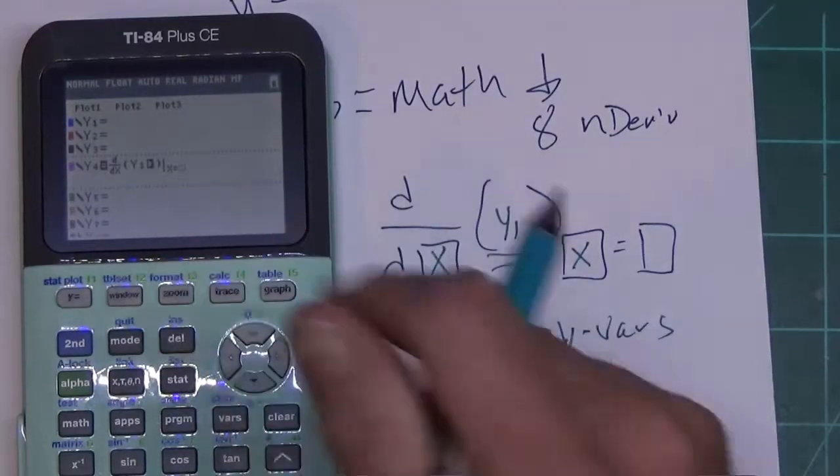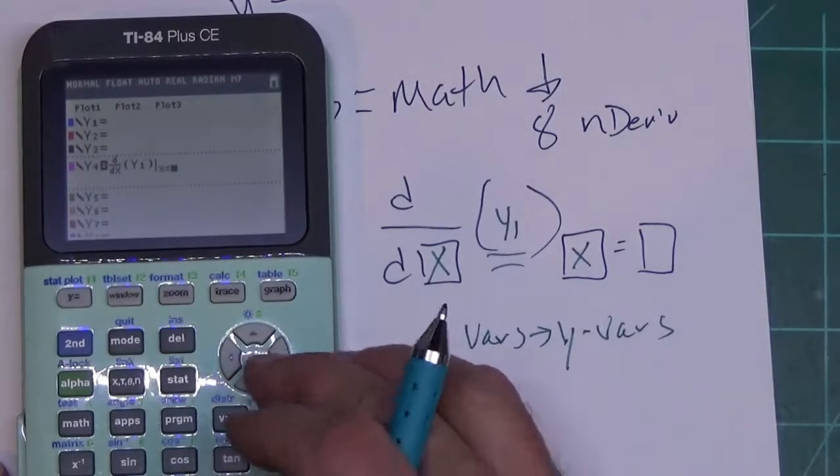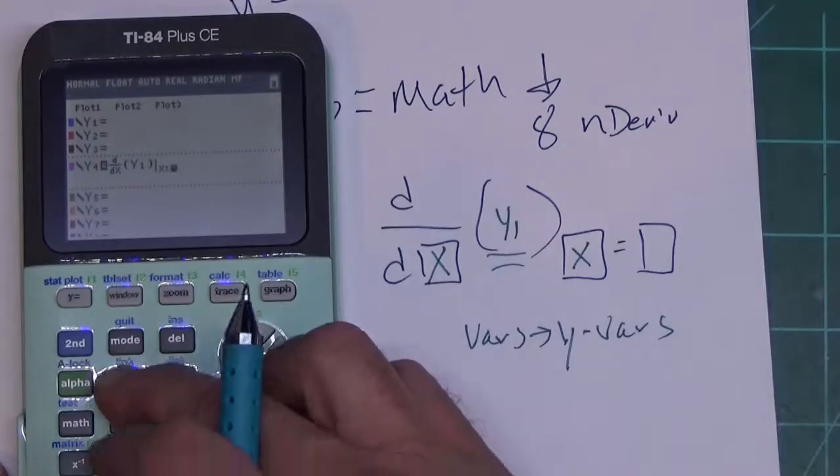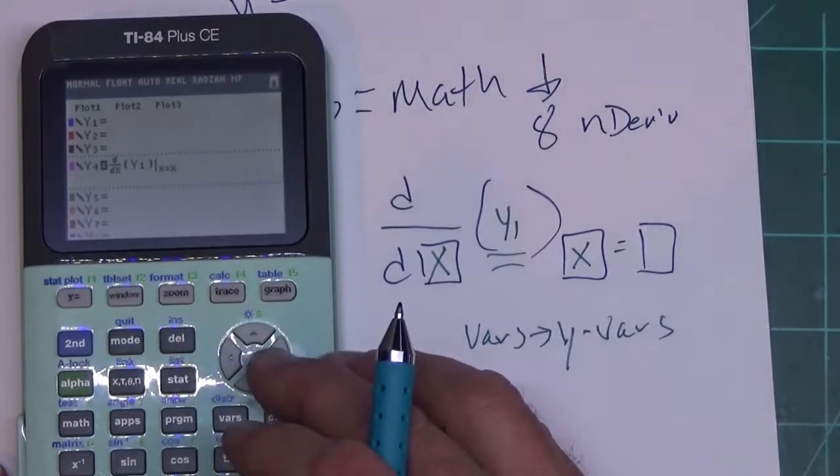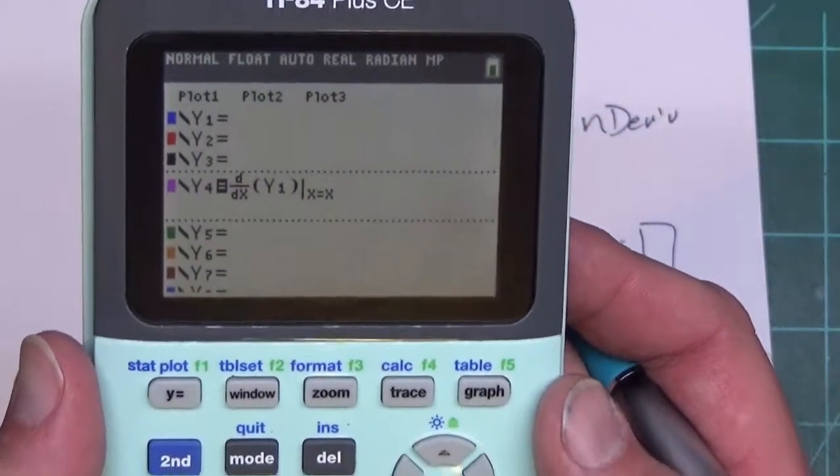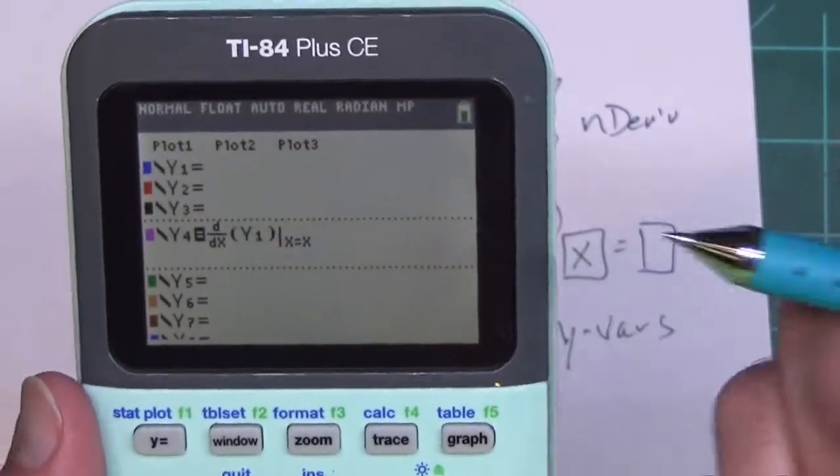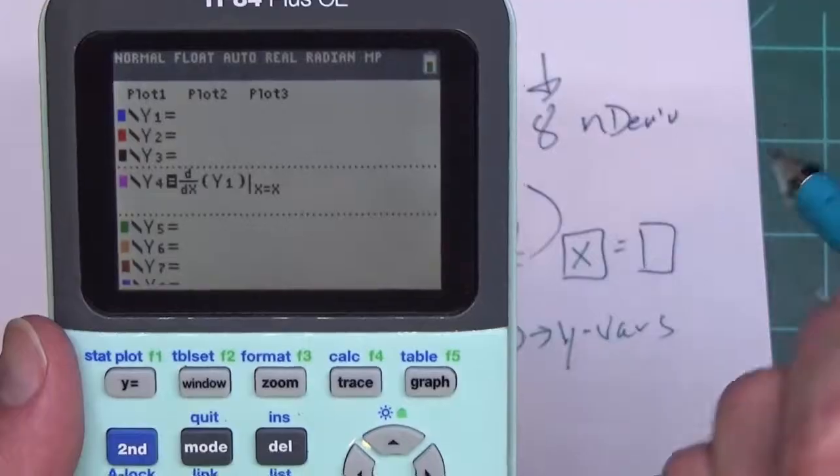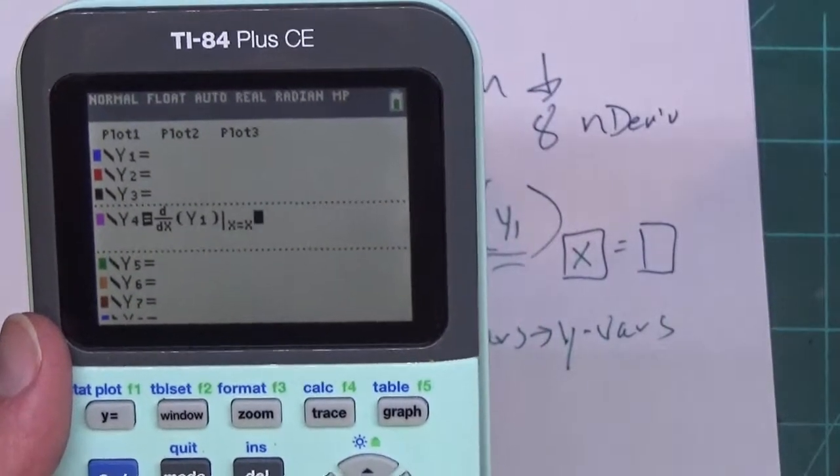Enter again and you get the y1 in there. So now I press arrow button over and I just put an x in the last box. Let me hold it up so everyone can see it. This is how it should look - that has the derivative setup, and I'll show you how useful that is in a minute.